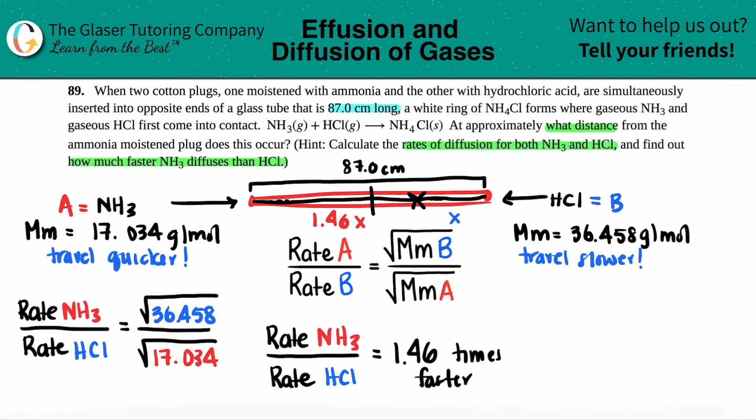I'll do this in different colors. The red is NH3, traveling all this way 1.46x. The blue is coming in here, that's just 1x. You see how they're meeting in the middle?